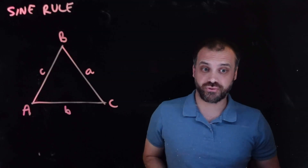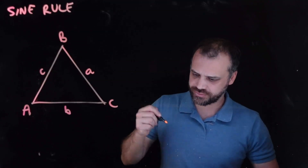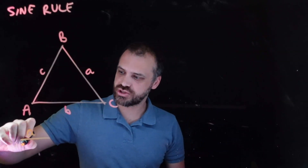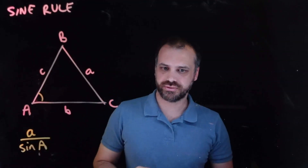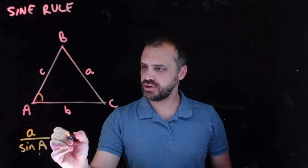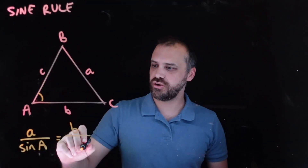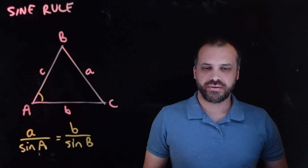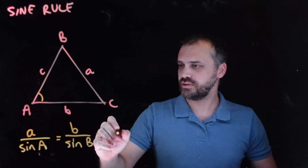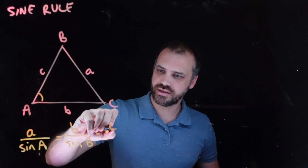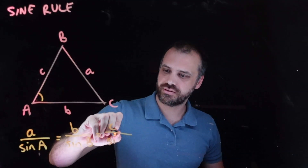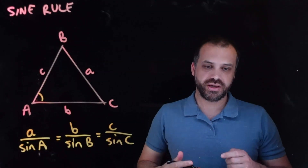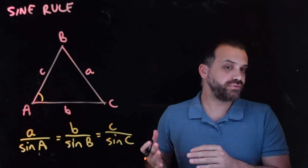First of all, I'm going to tell you what the formula is. It's a very interesting kind of formula. It says that side A divided by sine of angle A equals side B divided by sine of angle B. It is also true that side C divided by sine of angle C is equal to that as well. So we kind of have three different equations here.